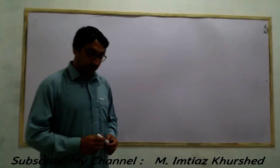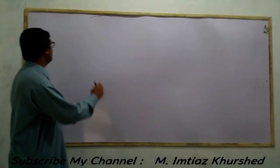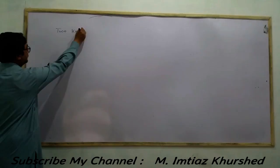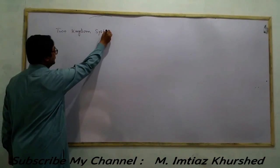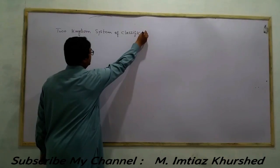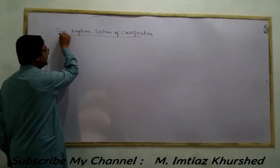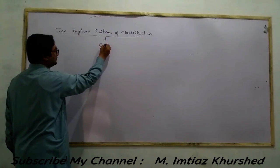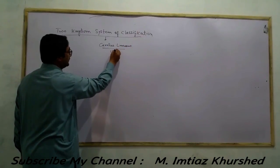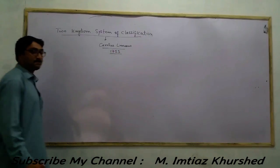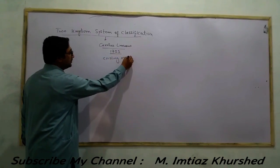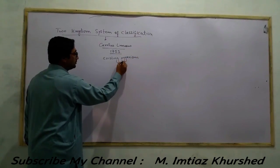For both students, the main topics are the Two Kingdom System of Classification. Neoscientist Carlos Linnaeus, in 1753, proposed this system, meaning that existing organisms are classified into two kingdoms.